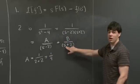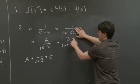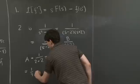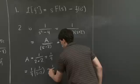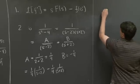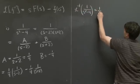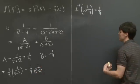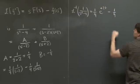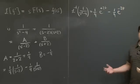For b, we plug in s equals negative 2: covering up the diverging factor and evaluating gives b equals negative 1 fourth. So the function is 1 fourth times 1 over s minus 2 minus 1 fourth times 1 over s plus 2. Taking the inverse Laplace transform, the inverse Laplace transform of 1 over s squared minus 4 is 1 fourth e to the 2t minus 1 fourth e to the negative 2t.